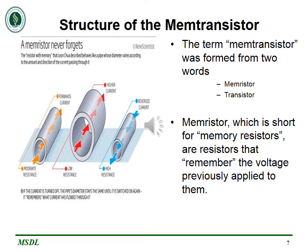The memtransistor is designed to behave and operate like the neuron, so it should be able to perform functions that the neuron can perform with similar low power consumption and at a similar speed. The term memtransistor was coined from two words: memristor and transistor, meaning that the memtransistor has the ability to perform the function of both a memristor and a transistor. We shall now discuss what memristors are.